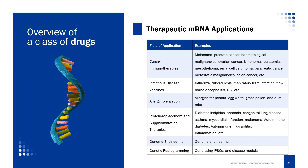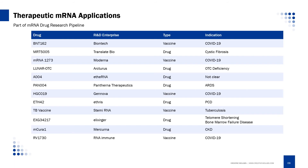Due to the rapid development of mRNA technology, mRNA therapy has been applied to many fields, such as cancer immunotherapies, infectious disease vaccines, allergy toleration, protein replacement and supplementation therapies, gene engineering, and genetic reprogramming. There are more than 150 mRNA drugs and vaccines in the pipeline worldwide, mainly for infectious disease, tumor disease, protein substitution, and gene therapy.